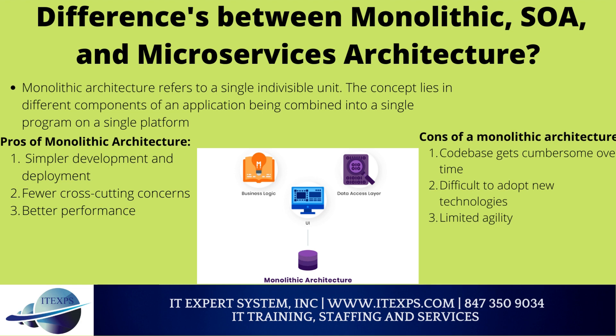Fewer crosscutting concerns: most applications are reliant on a great deal of crosscutting concerns such as audit trails, logging, and rate limiting. Monolithic apps incorporate these concerns much easier due to their single code base — it's easier to hook up components to these concerns when everything runs in the same app. Better performance: if built properly, monolithic apps are usually more performant than microservice-based apps. An app with a microservices architecture might need to make 40 API calls to 40 different microservices to load each screen, which obviously results in slower performance. Monolithic apps allow faster communication between software components due to shared code and memory.